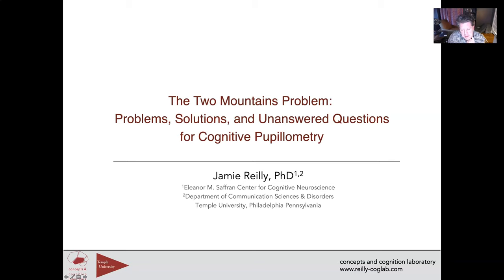Well hello and welcome. My name is Jamie Riley. I'm a professor of Communication Sciences and Disorders and Psychology at Temple University in Philadelphia. Today I'll be telling you a little bit about the Two Mountains problem, a way I've been looking at some of the measurement problems and some answers to questions about cognitive pupillometry.